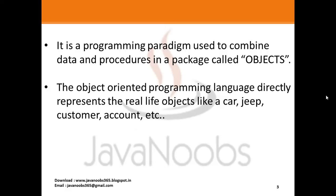In my previous tutorials I taught you about what an object is and what a class is, so I'll quickly recall: an object is an instance of a class. An object has certain characteristics like state, behavior, and identity. A class is a software blueprint which contains attributes and methods. These are the things you need to know to understand object-oriented programming.